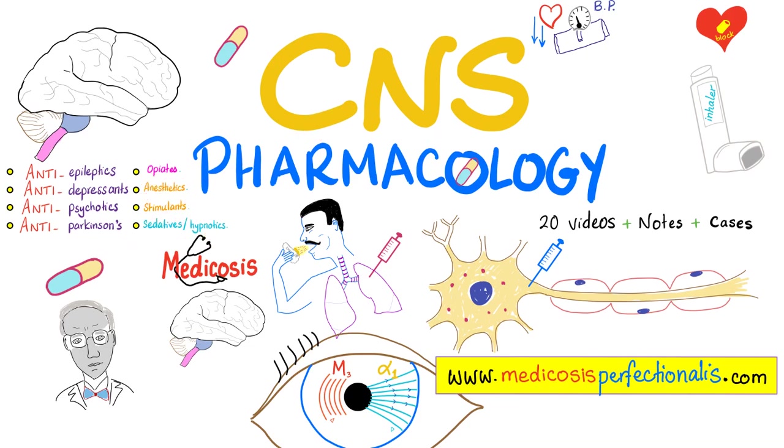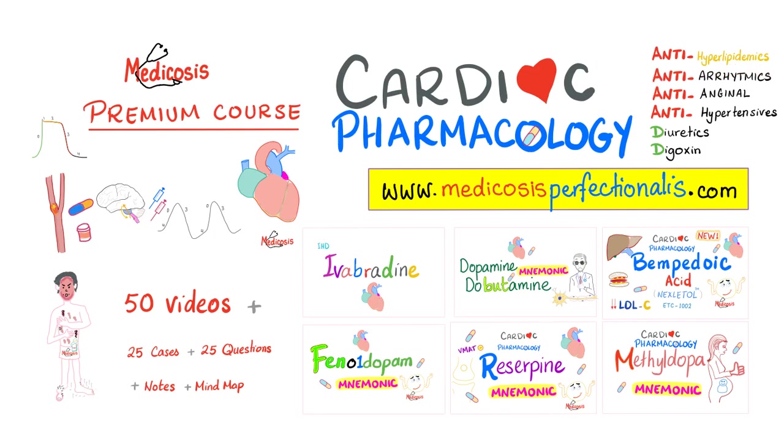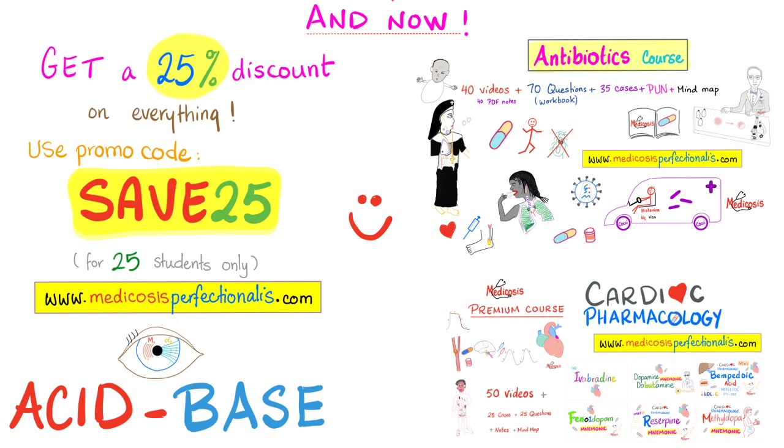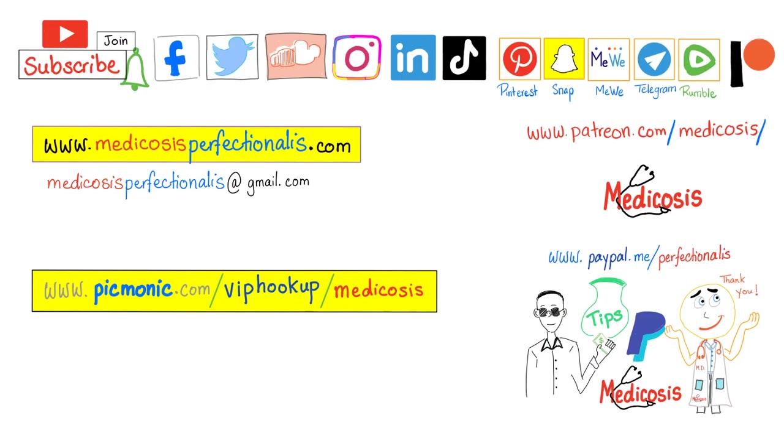If you want to learn about anti-epileptics, anti-depressants, anti-psychotics, anti-Parkinson's, opiates, anesthetics, stimulants, and sedative hypnotics, go to my CNS pharmacology course at medicosisperfectionalist.com. You can download it once and keep it for you forever. Also, you can learn about the anti-arrhythmics, anti-hyperlipidemics, anti-angina, anti-hypertensive diuretics, and digoxin by downloading my cardiac pharmacology course at medicosisperfectionalist.com. You can watch free samples on my YouTube playlist titles cardiac pharmacology. And for a limited time, you can get a 25% discount towards anything on my website, including my CNS pharmacology course, antibiotics course, cardiac pharmacology course, acid-base imbalance course. Just use discount code SAVE25 at checkout only for the next 25 students. Thank you for watching. Please subscribe, hit the bell, and click on the join button. You can support me here or here. Go to Picmonic for more than a thousand medical mnemonics. Go to my website to download my premium courses. Thank you for watching. As always, be safe, stay happy, study hard. This is Medicosis Perfectionist, where medicine makes perfect sense.